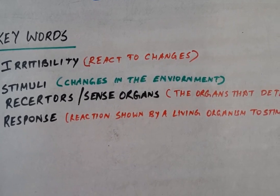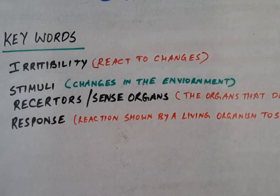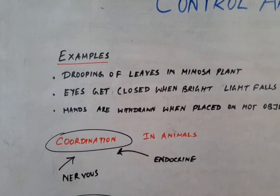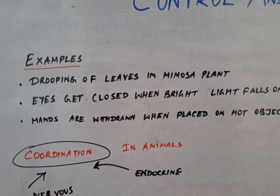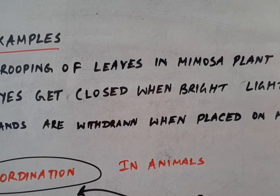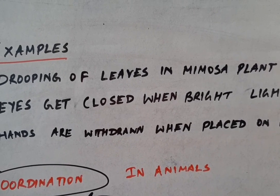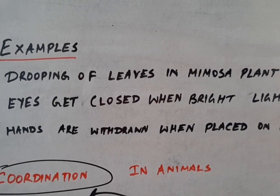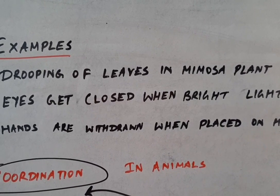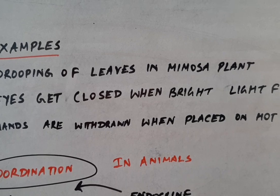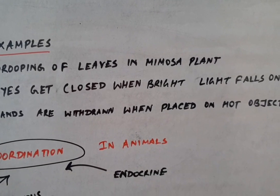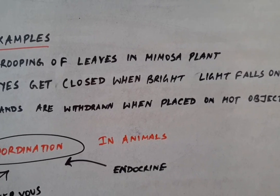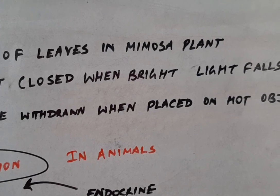Let's look at examples of coordination. First, the drooping of leaves in the mimosa plant — also called 'touch-me-not' — where touch is the stimulus and drooping leaves is the response. Second, our eyes get closed when bright light falls on them — bright light is the stimulus and closing of eyes is the response. Third, our hands are withdrawn when placed on hot objects — the hot object is the stimulus and withdrawing the hand is the response.